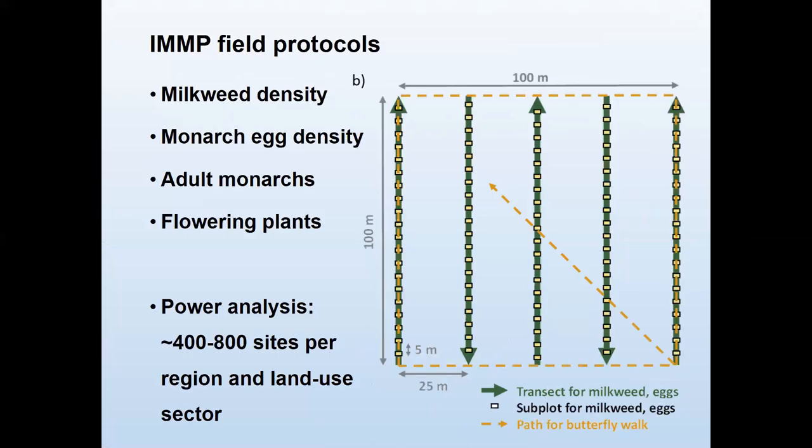I'll tell you a little about the field protocol so you have a sense of what's actually being measured. In this case we're monitoring four main things. One is the density of milkweed, measured by setting a series of transects across your study plot, then monitoring subplots where you put down a little frame and count the milkweed in the frame, giving you milkweed plants per square meter.